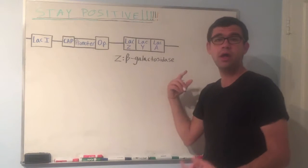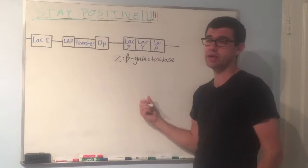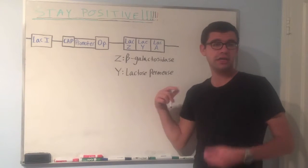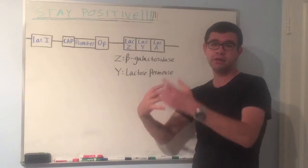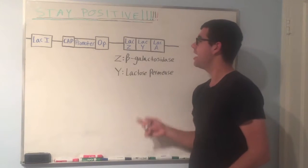Now next is LAC-Y. LAC-Y codes for a protein that we call a permease or lactose permease. Let's write that up. And the lactose permease is actually going to have the job of transporting the lactose into the cell, so that it could be broken down in the first place.